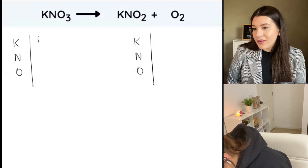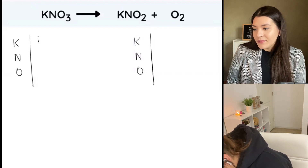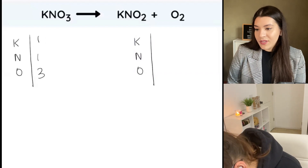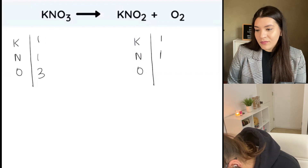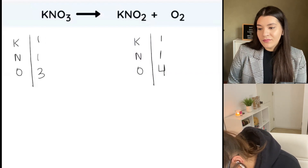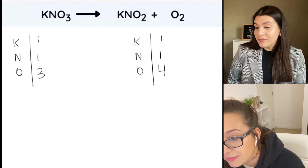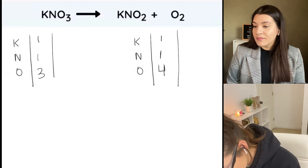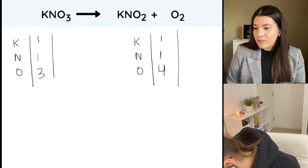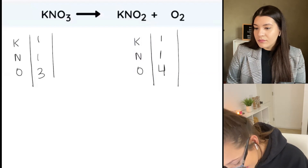Okay, so we have one of these, one of these, one of these, three of these — perfect. Over here: one of these, one of these, and four. Good. We might need to do a fraction.